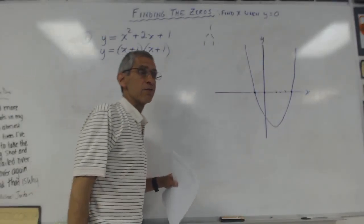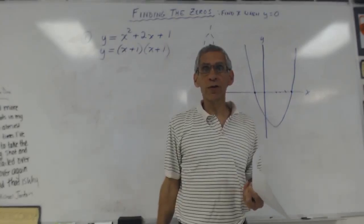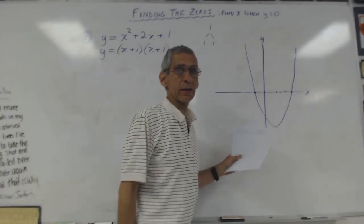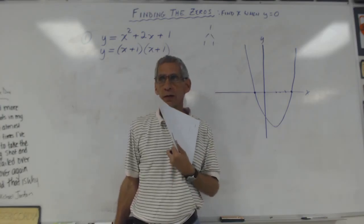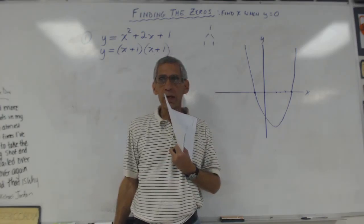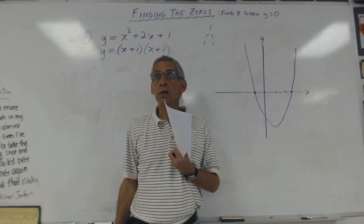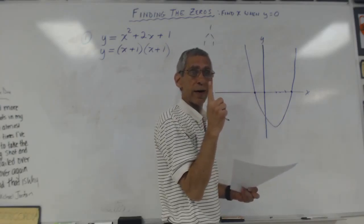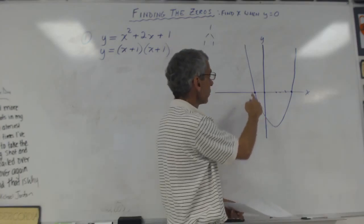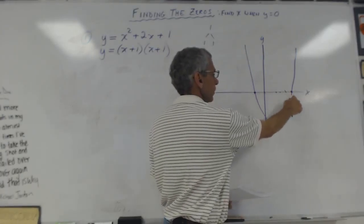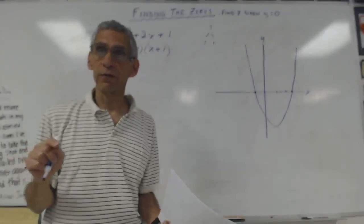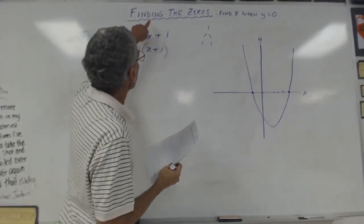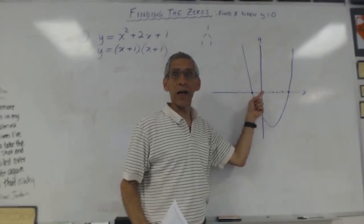Now that is very useful — way more useful than you realize. When they say find the zeros, what's another way to word it? Find the x-intercepts, right? The only thing is, with a straight line there's only one x-intercept — it just crosses the x-axis in one place. But with a parabola, it crosses in two different places. Very useful information. The main thing right now is to understand that finding the zeros means find x when y is zero.